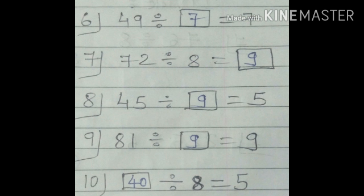Number 7: 72 divided by 8 is equal to dash. Here we divide 72 by 8, so we need to know the 8 times table. 72 divided by 8 is 9. You can see I have written 9 in the box. Number 8: 45 divided by dash is equal to 5. Here we divide 45 by 5. We need the 5 times table — 5 nines are 45. So the answer in the box is 9.